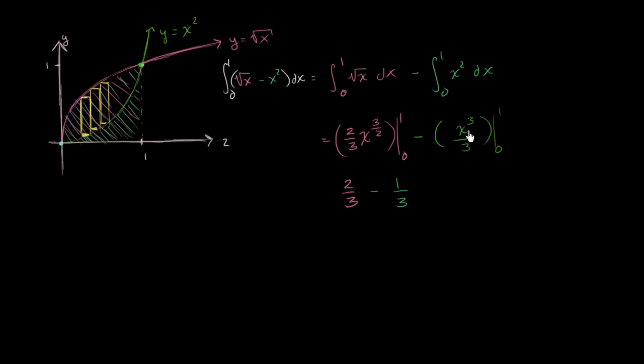And then we're going to subtract this thing evaluated at 1, which is 1 third. Subtracting it evaluated at 0, which is 0, this whole thing simplifies to subtracting 1 third. And there you have it. We get our answer: 2 thirds minus 1 third equals 1 third.